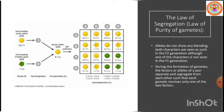The Law of Segregation is also known as the Law of Purity of Gametes. We know that alleles do not show any blending — both characters are seen as such in the F2 generation, although one of the characters is not seen in the F1 generation.